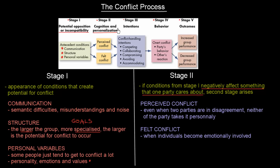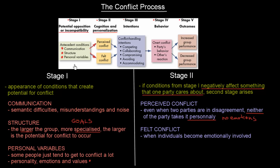The second stage is called cognition and personalization. The question is whether we are going to take it personally. We can either take it personally, or go through what we call perceived conflict — where even when two parties are in disagreement, neither of the parties takes it personally. There are really no emotions involved. Or, the worst scenario is a felt conflict, when individuals become emotionally involved.